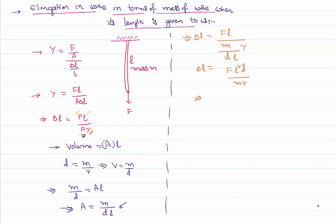I can write δL of the wire is directly proportional to L squared by mass of that wire. That means increase in the length of the wire is directly proportional to the square of the length.